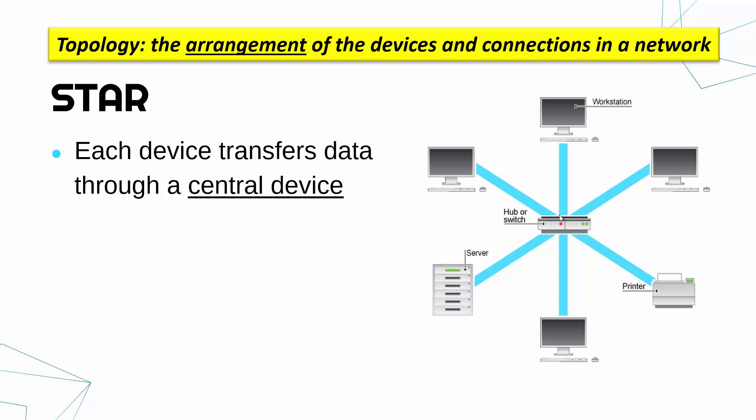Star topologies are quite common in home networks for Wi-Fi. That middle device could be anything really. It could be a hub, a switch, a router, or a wireless access point. It doesn't matter what it is, either wired or wireless, but all data is going through that central point.